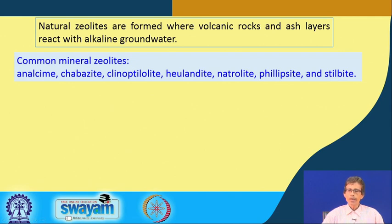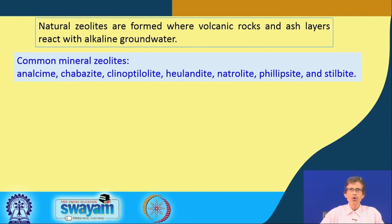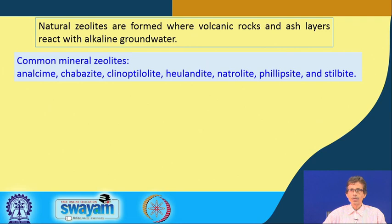A geologist or a chemist or a physicist knows very well which is your stilbite. These are a common tagging of these zeolite minerals, and we are basically interested to know what are the naturally occurring mineral sources of these zeolites, because we will be interested to make something in the laboratory - that means the man-made zeolites which will be of our demand and of a different type.